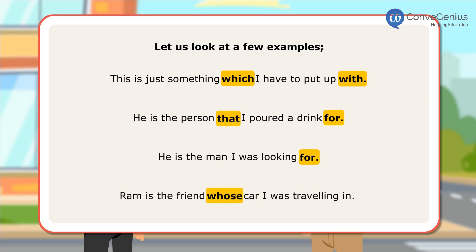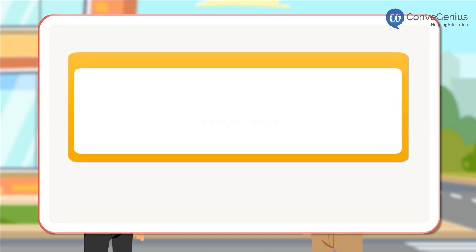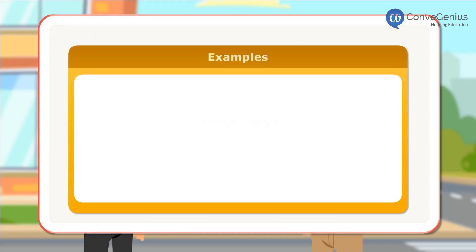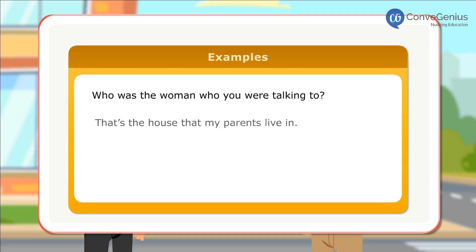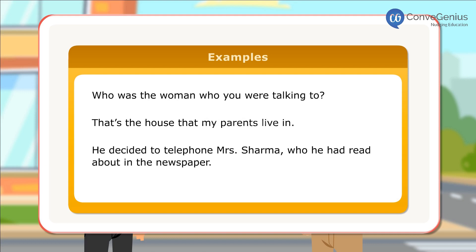'Ram is the friend whose car I was travelling in.' Used at the end of the sentence with relative pronoun whose. Here are some more examples. 'Who was the woman who you were talking to?' 'That's the house that my parents live in.' 'He decided to telephone Mrs. Sharma, who he had read about in the newspaper.'